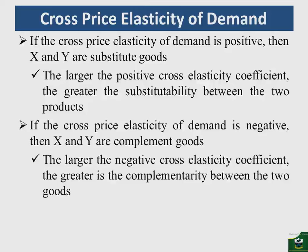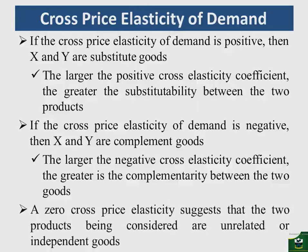If the cross price elasticity of demand is negative, X and Y are complement goods. The larger the negative cross elasticity coefficient, the greater the complementarity between good X and good Y. If the negative value is smaller, the complementarity is also smaller. Remember that complement goods go hand in hand — for example, a car and fuel, or bread and butter.